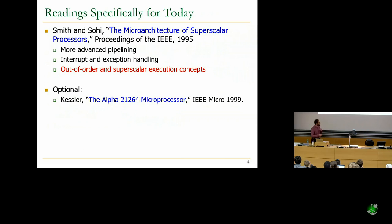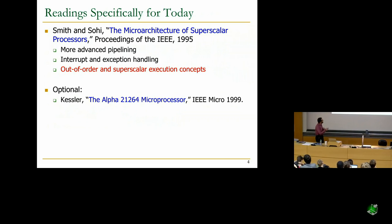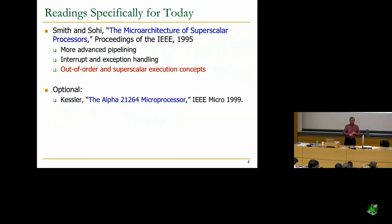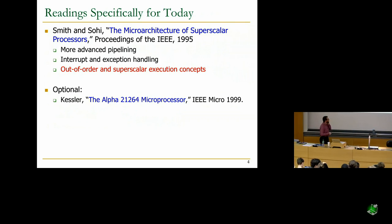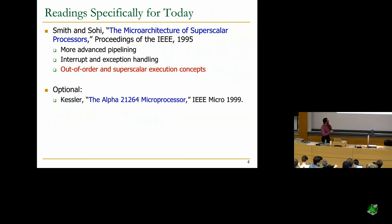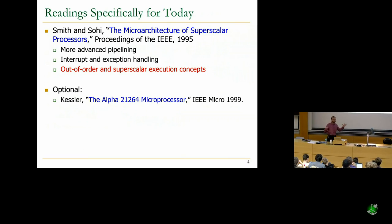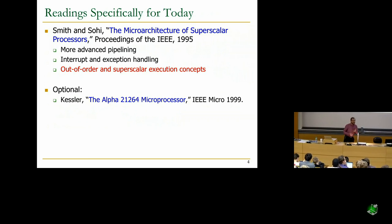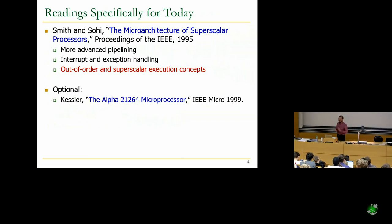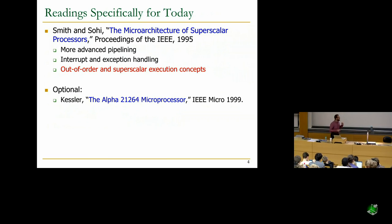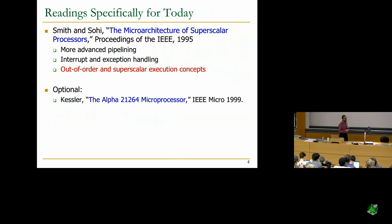There's an optional reading on a relatively modern microprocessor, the Alpha 21264. It talks about the design of the Alpha processor in the late 1990s, and you'll see how all these concepts come together: pipelining, out-of-order execution, branch prediction. It's optional because it's a dense reading, but if you're really interested, I'd recommend you take a look. You'll see how a processor 20 years ago was designed and how many predictors there are.